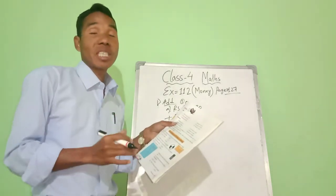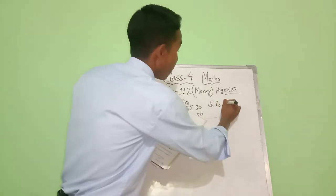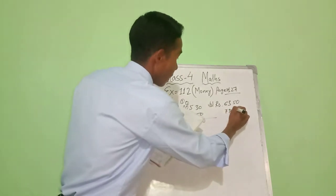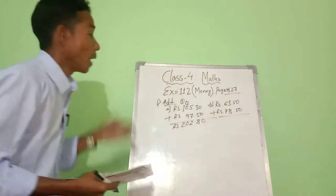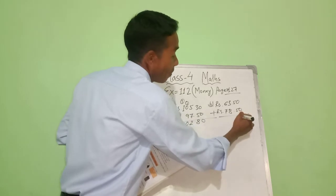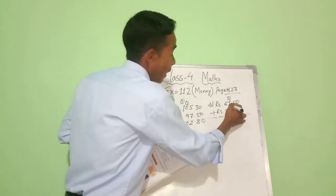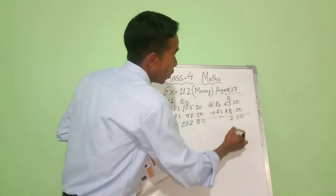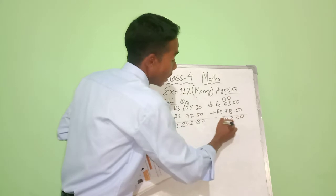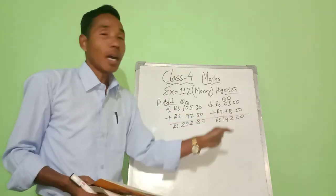Addition means to put together — it's very easy. Now I'm going to do number b. In the question we have 63 rupees 50 paise and 78 rupees 50 paise. Zero plus zero is zero. Five plus five is ten, one carried forward. Eight plus three is eleven, plus one is twelve, carry one. Seven plus six is thirteen, plus one is fourteen. Total: 142 rupees is our answer.